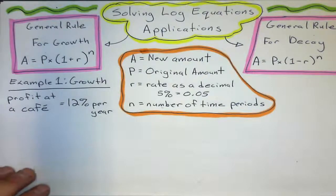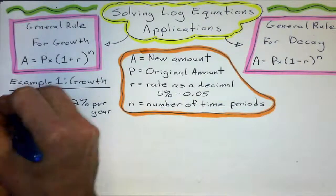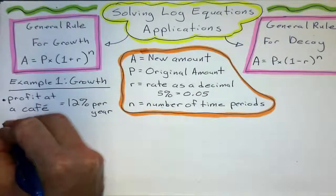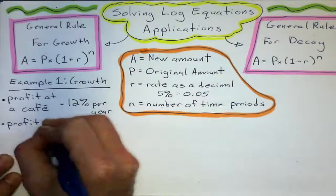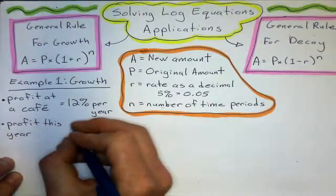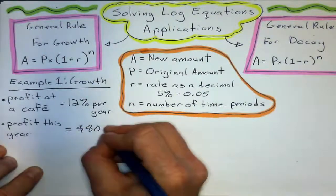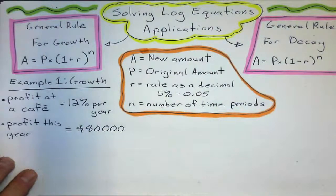Okay, so we'll say the profit is 12% per year. That would be a pretty profitable cafe. And let's say the profit they got this year. So, we'll put these in bullet points. Profit this year.